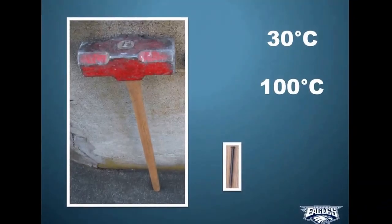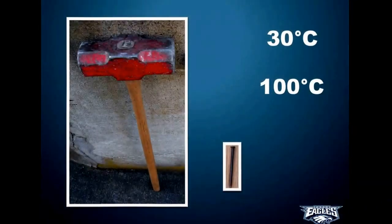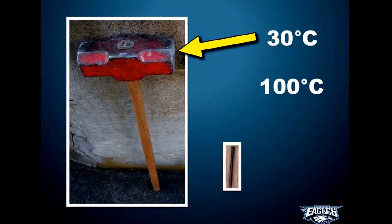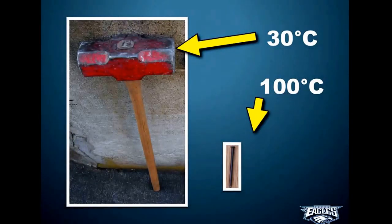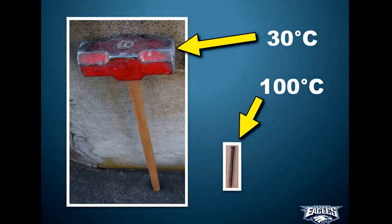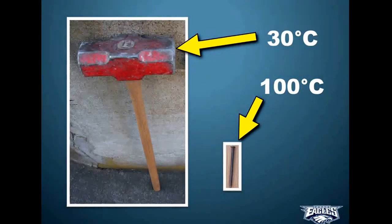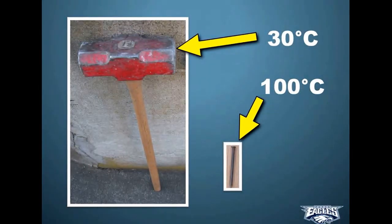Let's take a look at these two objects. We have a sledgehammer and a nail. The sledgehammer, let's say, is at 30 degrees Celsius — it's been sitting out in the sun for a while. And the nail, for some reason, we just took it out of the oven, and it's at 100 degrees Celsius. Which of these two objects has more thermal energy?